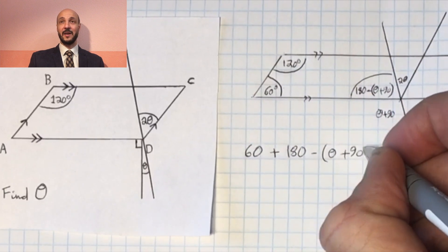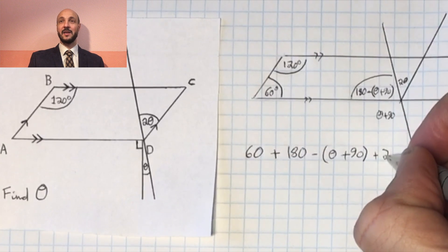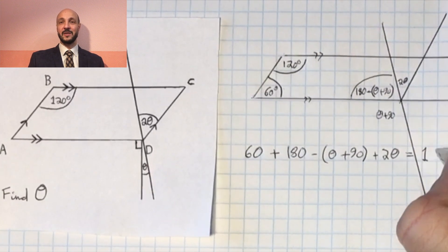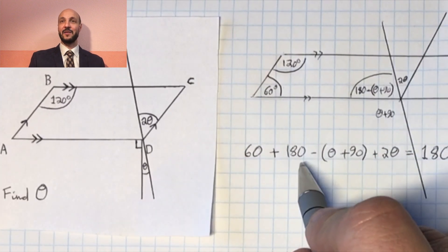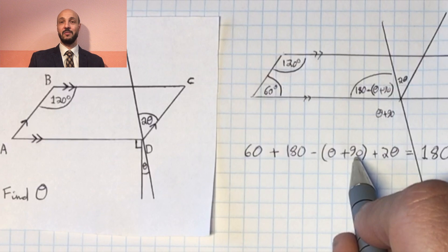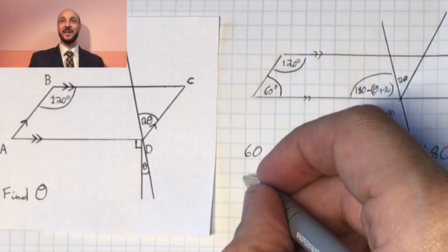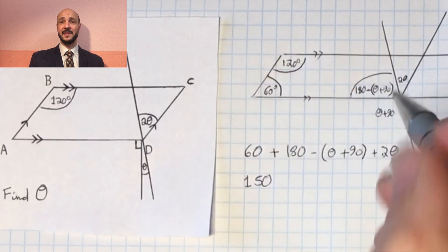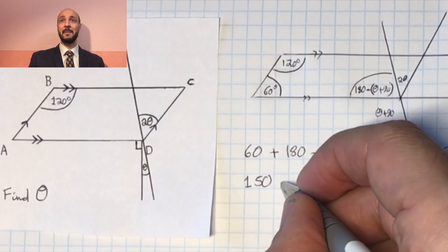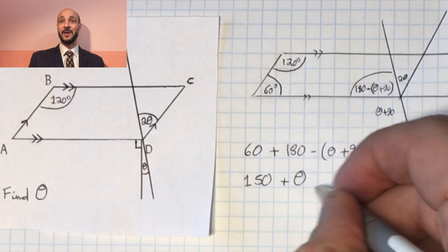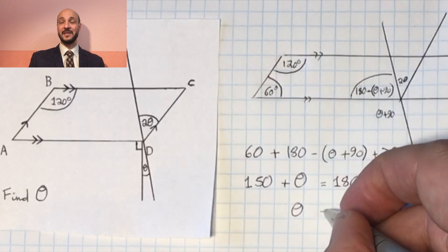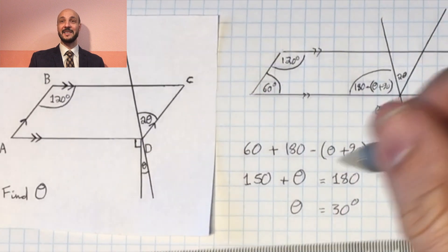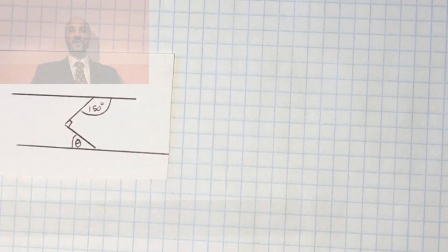This isn't an algebra course, it's a geometry course, and it's a fairly straightforward equation. Gathering the numbers: 60 plus 180 minus 90 gives 150. Gathering the θ terms: minus θ plus 2θ gives θ. Subtracting 150 from both sides, we get our final answer: θ equals 30 degrees.